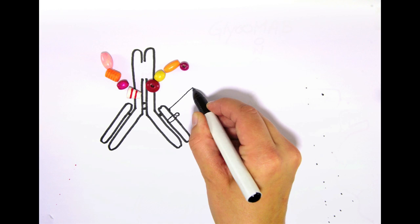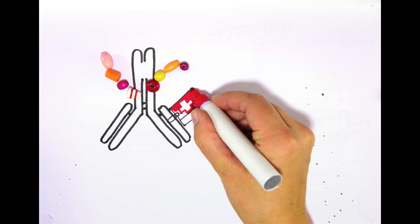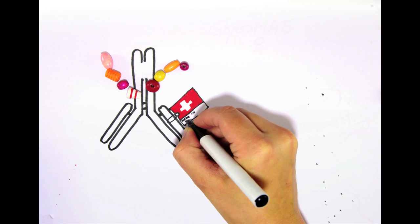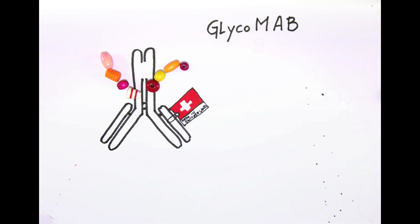At the Roche Piret Center in Schlieren, Switzerland, we have developed a technique that allows us to control the antibody glycosylation step in an efficient and precise way. We call the resulting antibodies Glycomaps, glycoengineered monoclonal antibodies.